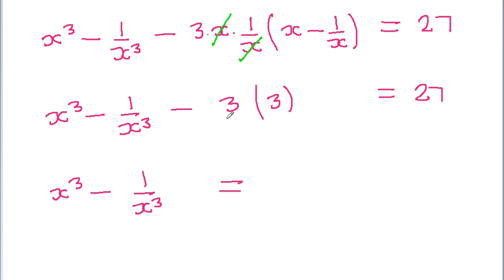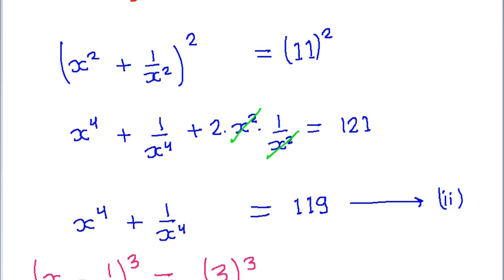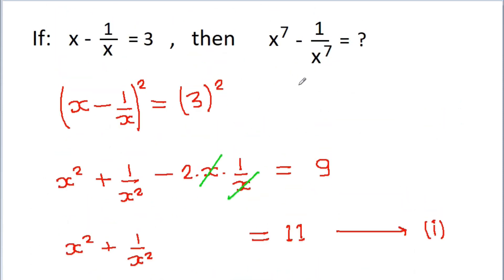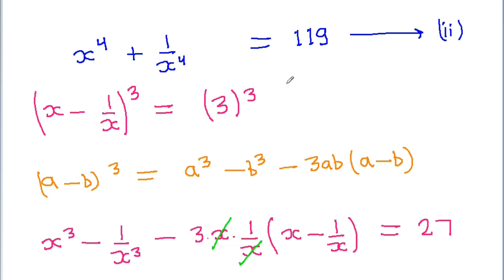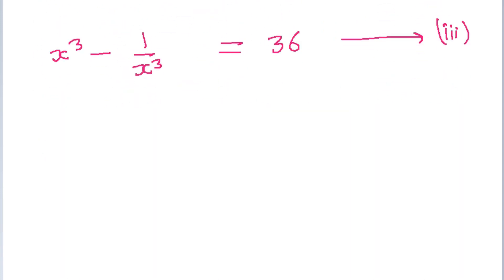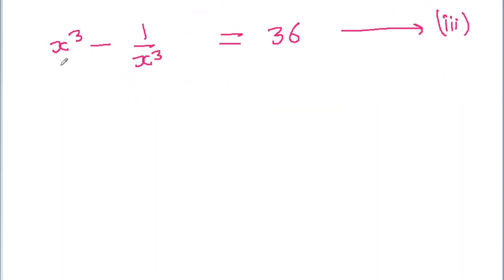So x cubed minus 1 by x cubed equals 27 plus 9, which is 36. Let's call this equation 3. Now we have to find the value of x to the power 7 minus 1 by x to the power 7. If we multiply equation 2, which is x to the power 4 plus 1 by x to the power 4 equals 119, and equation 3, which is x cubed minus 1 by x cubed equals 36.